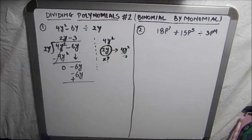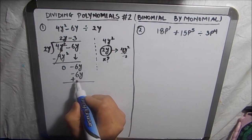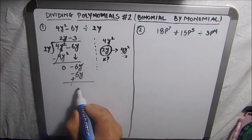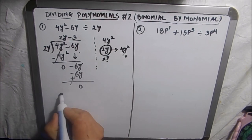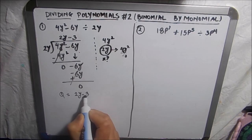Signs get changed. So this will be plus, and minus 6y plus 6y is 0. So our quotient here is 2y minus 3 and remainder is 0.